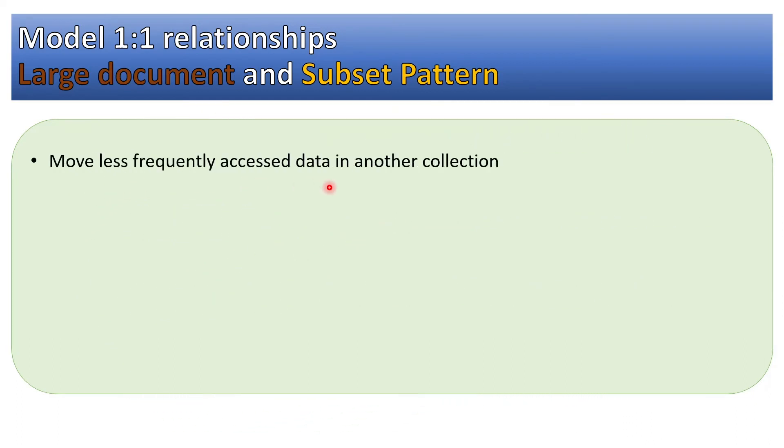Move less frequently accessed data into another collection. For example, we can have top five reviews which have been submitted—maybe we can sort it by date in the collection—or we can keep only last five reviews.